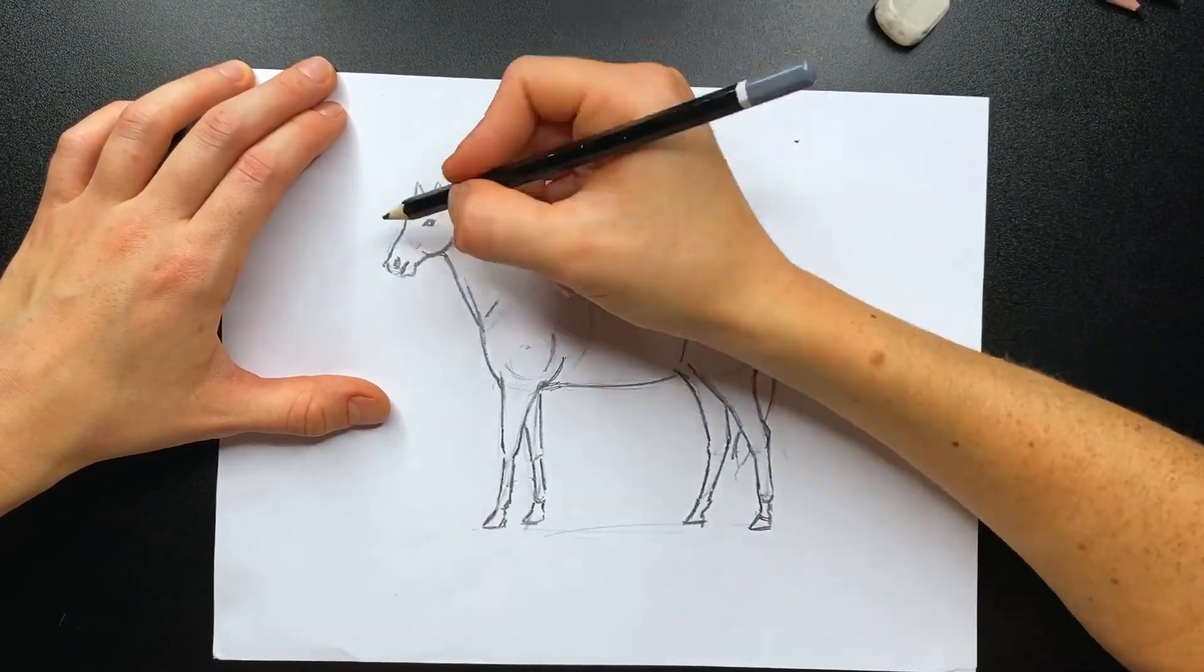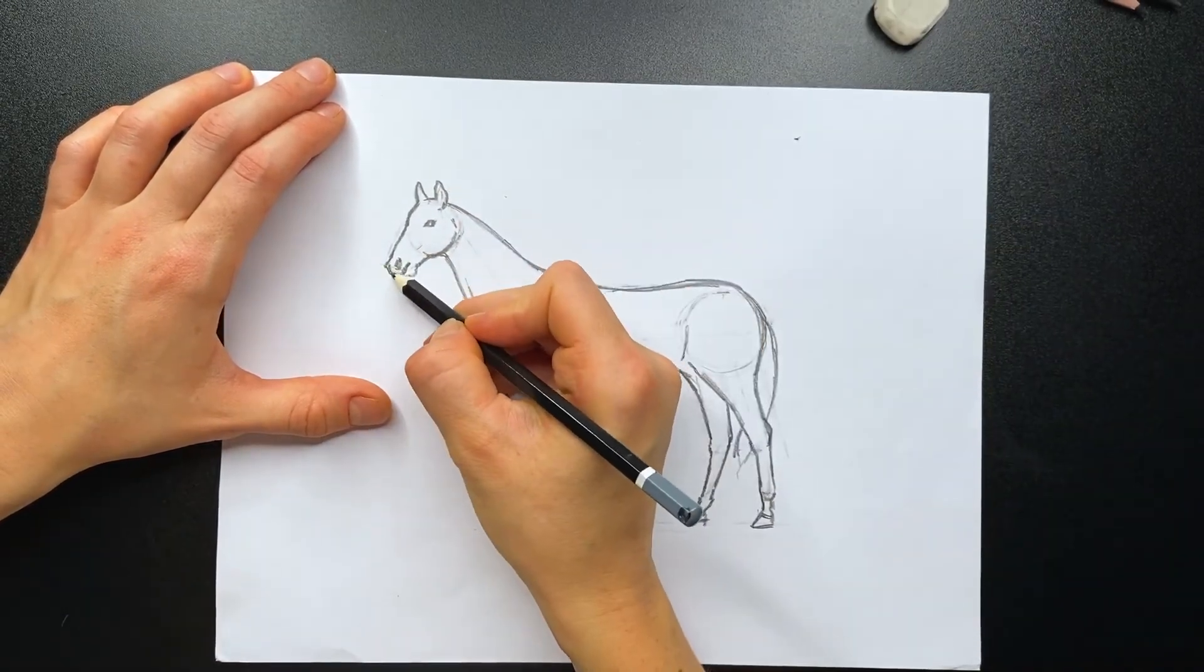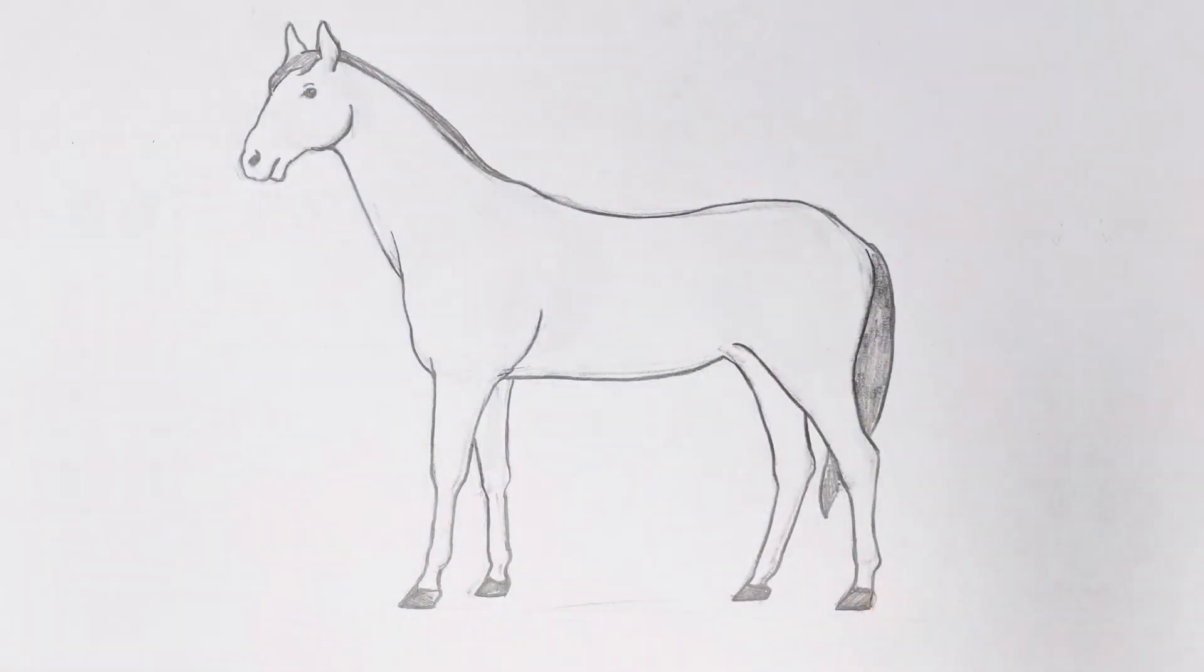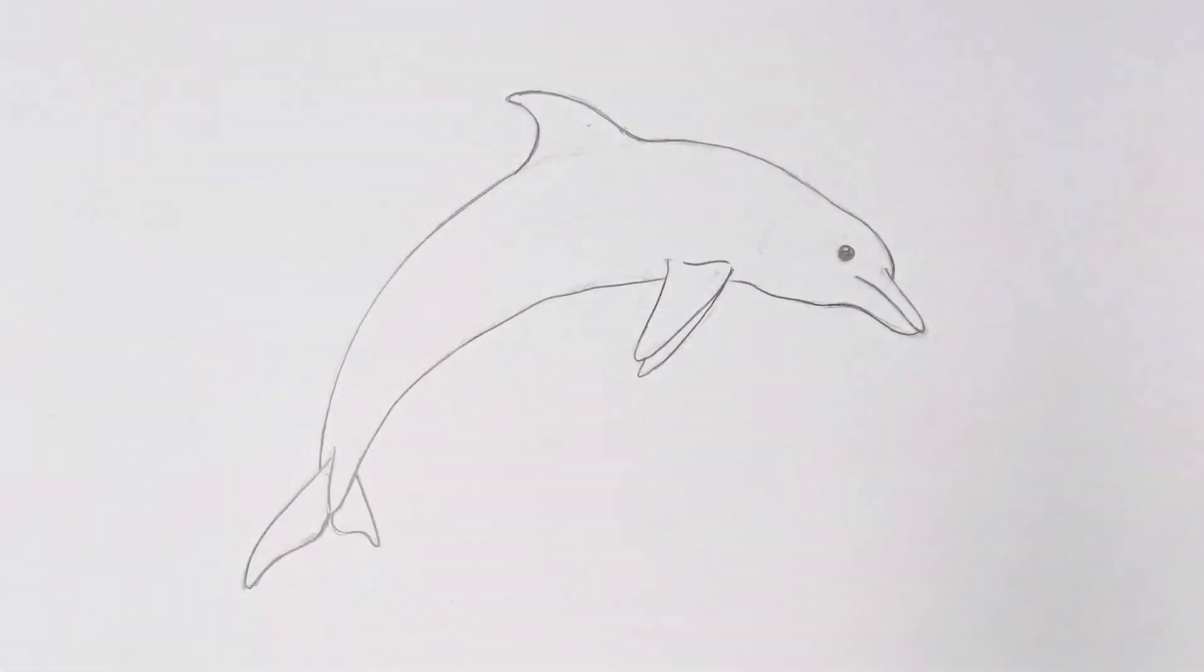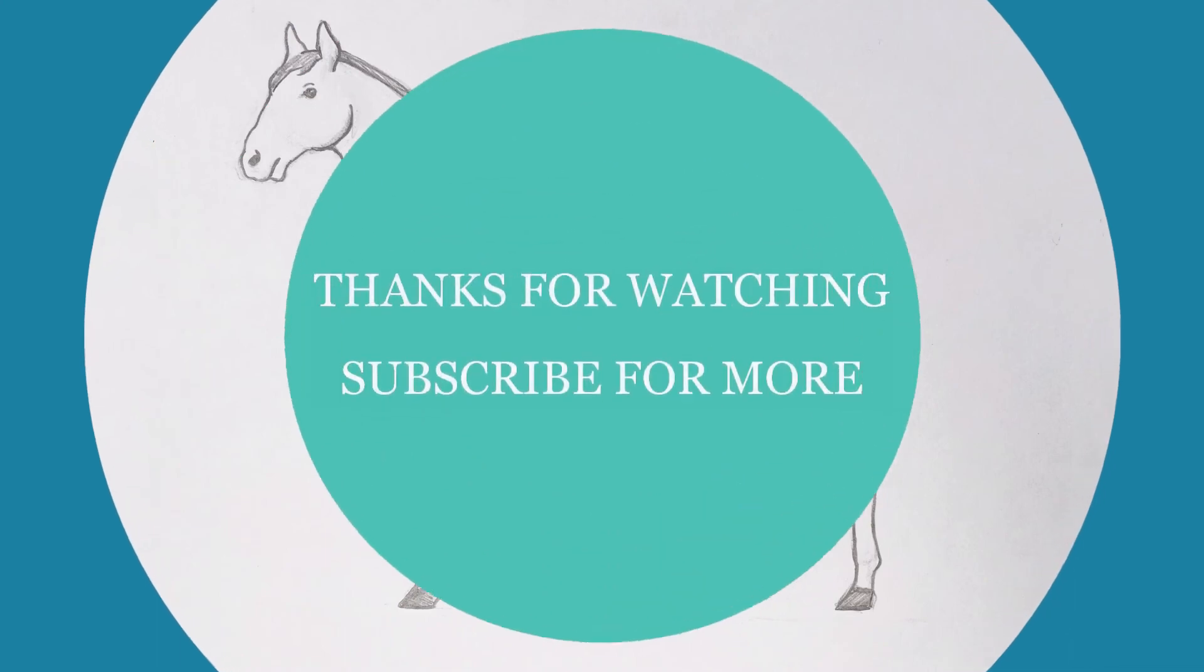Clean up your drawing using eraser and add some details. And you will have a drawing of a horse, looking like this. Here are final drawings of a bird, a dolphin, and a horse. Let me know which animal you liked drawing the most.